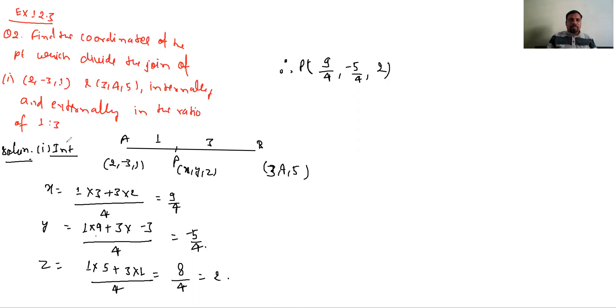To P ka coordinate ho gaya hamara (9/4, -5/4, 2). Yeh ban gaya internal division ka. Next hai hamara external division.